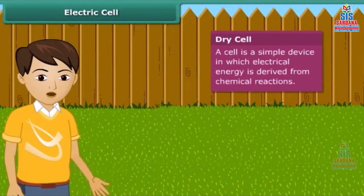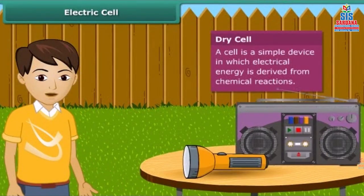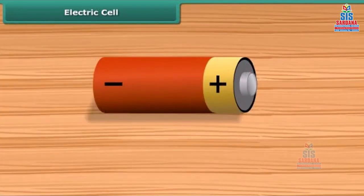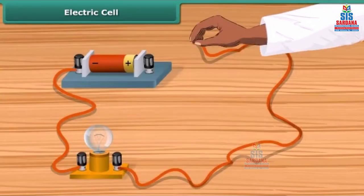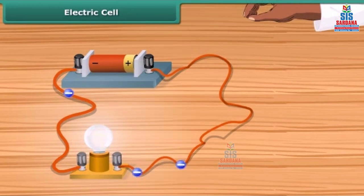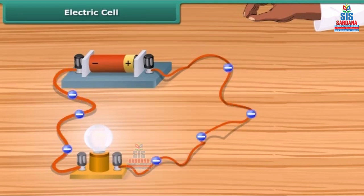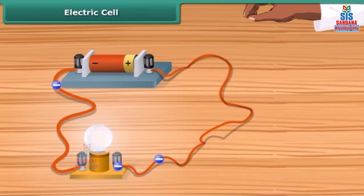A dry cell battery, used in a torch or transistor radio, is a source of electric current. Every battery has two terminals marked plus and minus. When a metallic wire connects these two terminals, the electrons resulting from a chemical reaction start flowing through the wire, constituting an electric current. These electrons flow from the negative to the positive terminal.